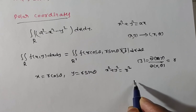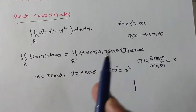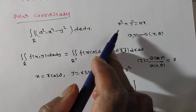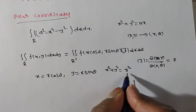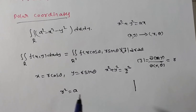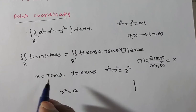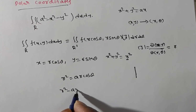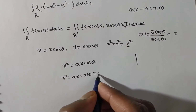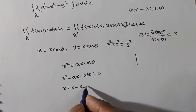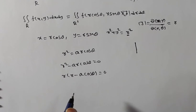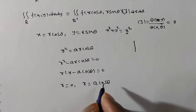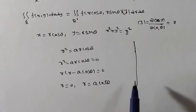Changing into polar coordinates means we have to convert x and y values into r and θ, so the limits also have to change. The given region is x² + y² = ax. Since x² + y² = r² and x = r cosθ, we have r² = a·r cosθ. This gives r² - ar cosθ = 0, or r(r - a cosθ) = 0. So we get r = 0 and r = a cosθ, which gives the circle.